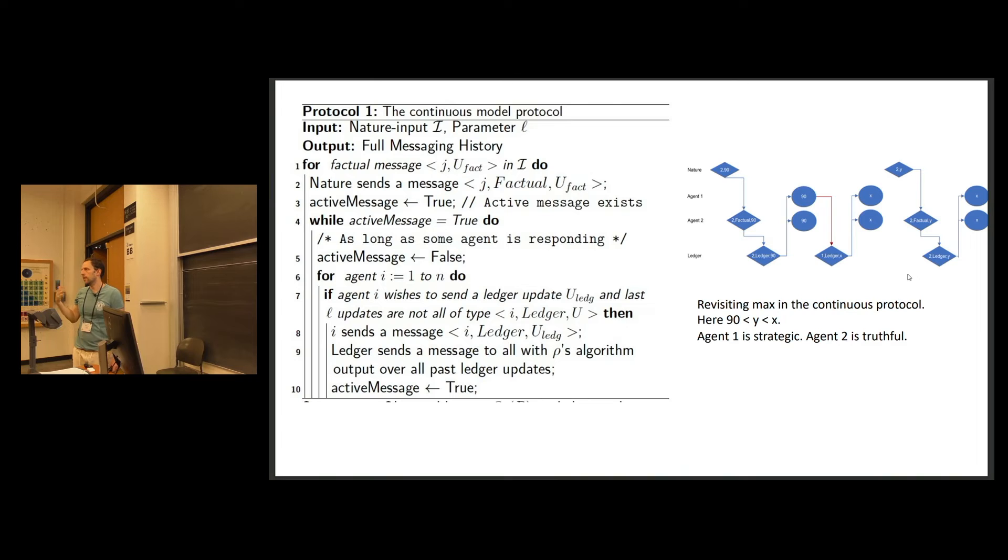We assume in this example that X is larger than 90. And so the new max is X and it's updated by the center to everyone. So for now it looks like a successful attack on behalf of agent one. But the problem is now the next thing that nature does is sends Y, which is between 90 and X. And this Y is sent to agent two, sent to the central authority. And now the central authority updates everyone with X because X is still the maximum. So again, like similar to the one-shot case, agent one doesn't know what is Y because Y should have been the true result of the max computation.